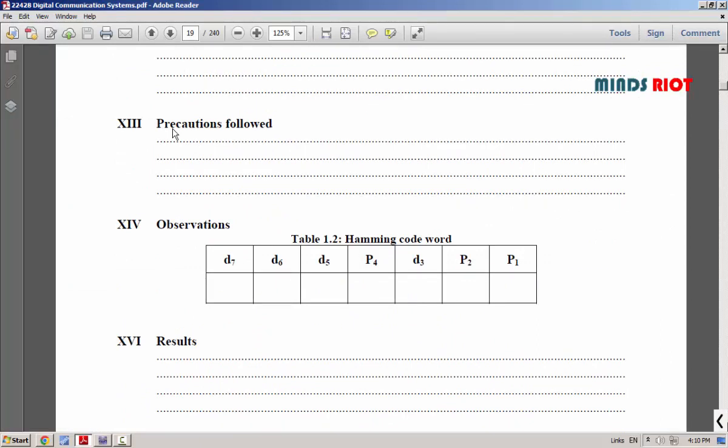Whatever the data we have got, that we have to put in this Hamming code word. As I said, for 1011: D7 will be 1, D6 will be 0, D5 will be 1, and D3 will be 1. This is our data and we have observed the parity bit in the Multisim and it was 001. Only parity P1 was set. So, you have to write down this observation in the observation table.